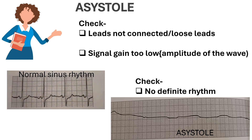You can see a normal sinus rhythm has definite P waves, definite QRS complex, and definite T waves. But in Asystole, these are all absent - no P wave, no QRS complex. There is no PR interval, there is no QRS. So due to that Asystole occurs. The manifestations are: no pulse, no breathing, unresponsive, and there is no definite rhythm. It is Asystole.